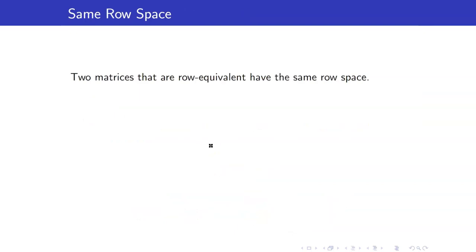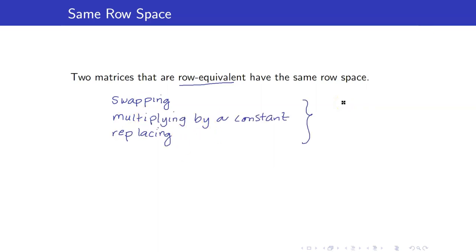Here is a theorem that is very useful for us: two matrices that are row equivalent have the same row space. Why is this true? Recall that row equivalent means we can get one matrix from the other by performing row operations. If we look at our row operations of swapping, multiplying by a constant, and replacing, the resulting matrices will have rows that are just linear combinations of the original rows. For example, R1 plus 2R2 gives a new R1 that is a linear combination of the old R1 and old R2. So if two matrices are row equivalent, they will have the same row space.